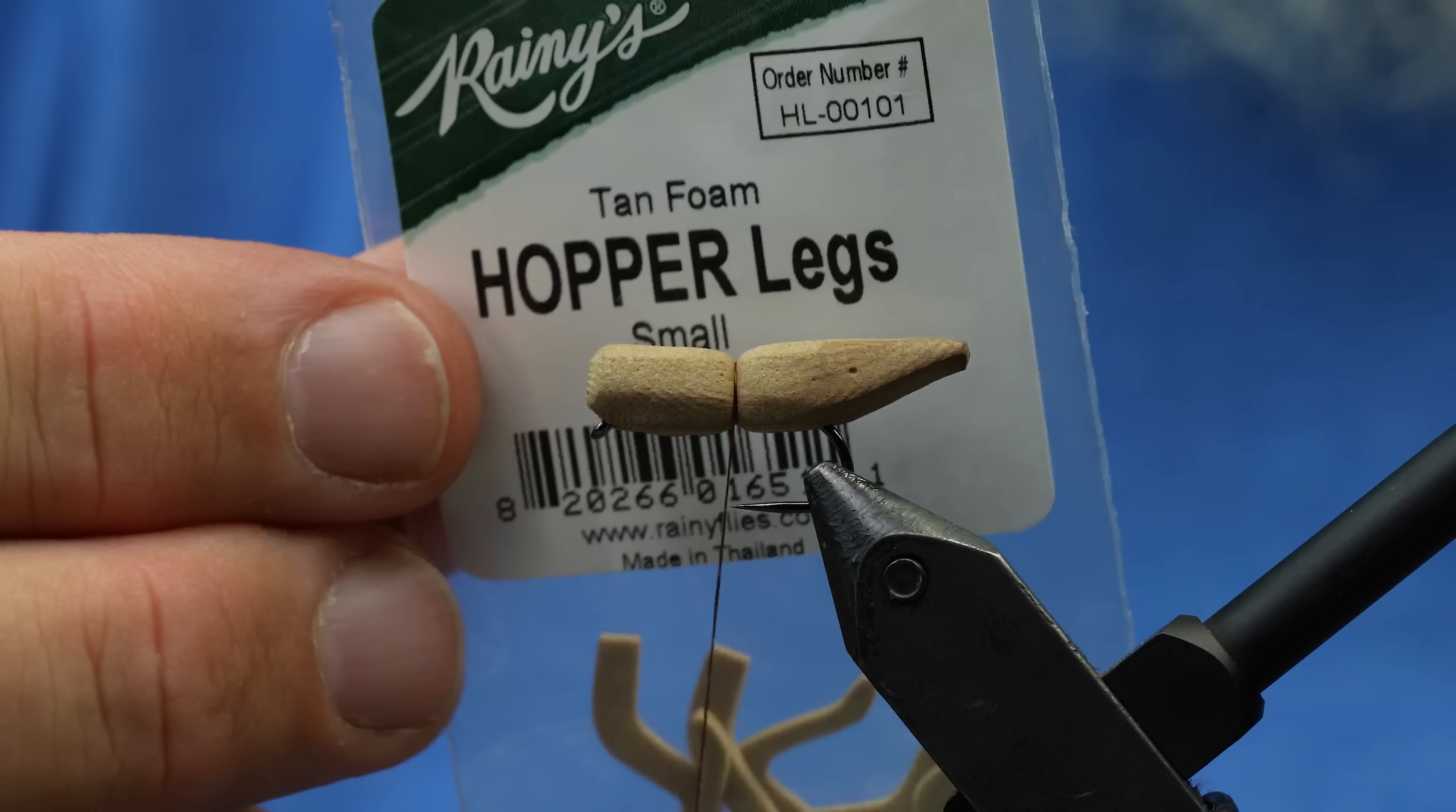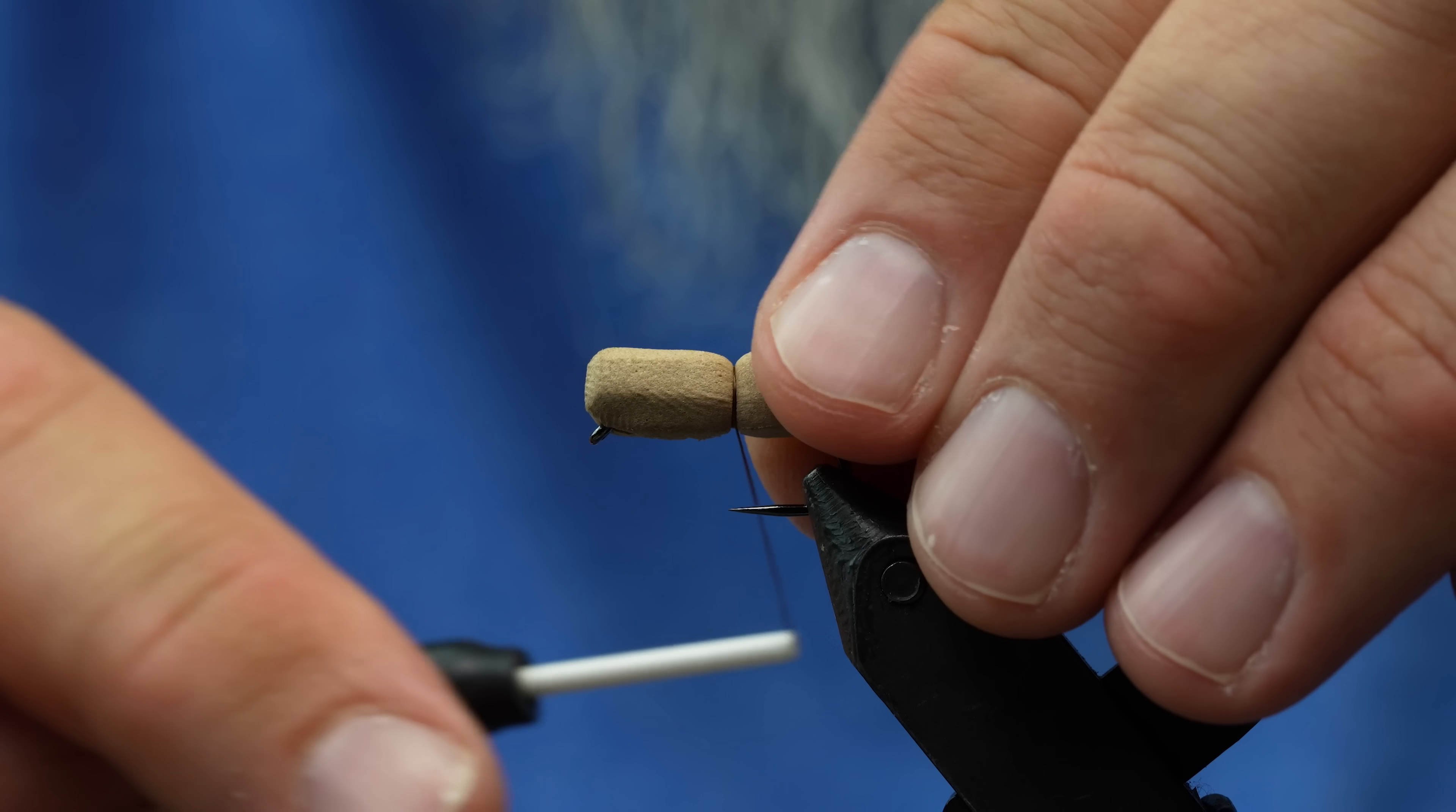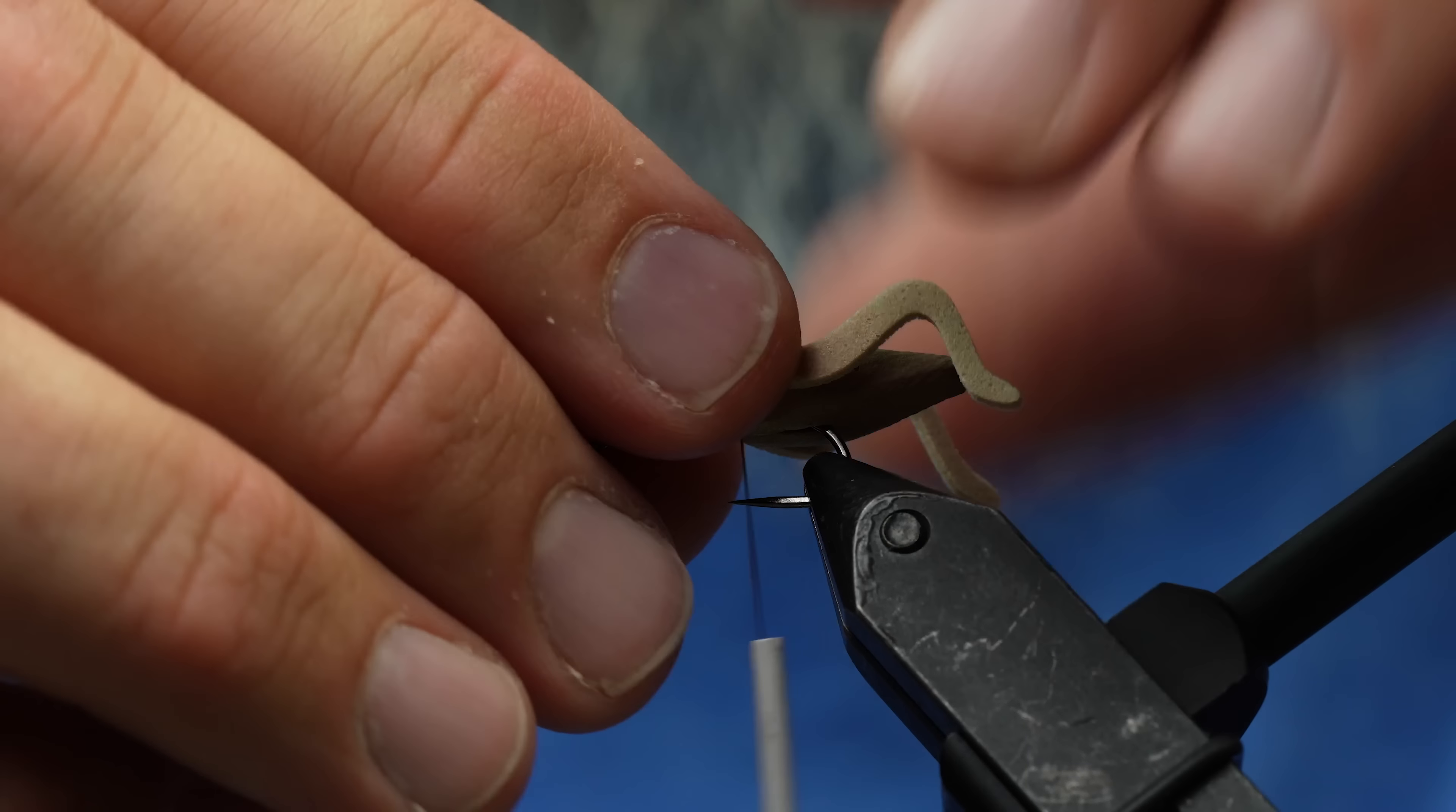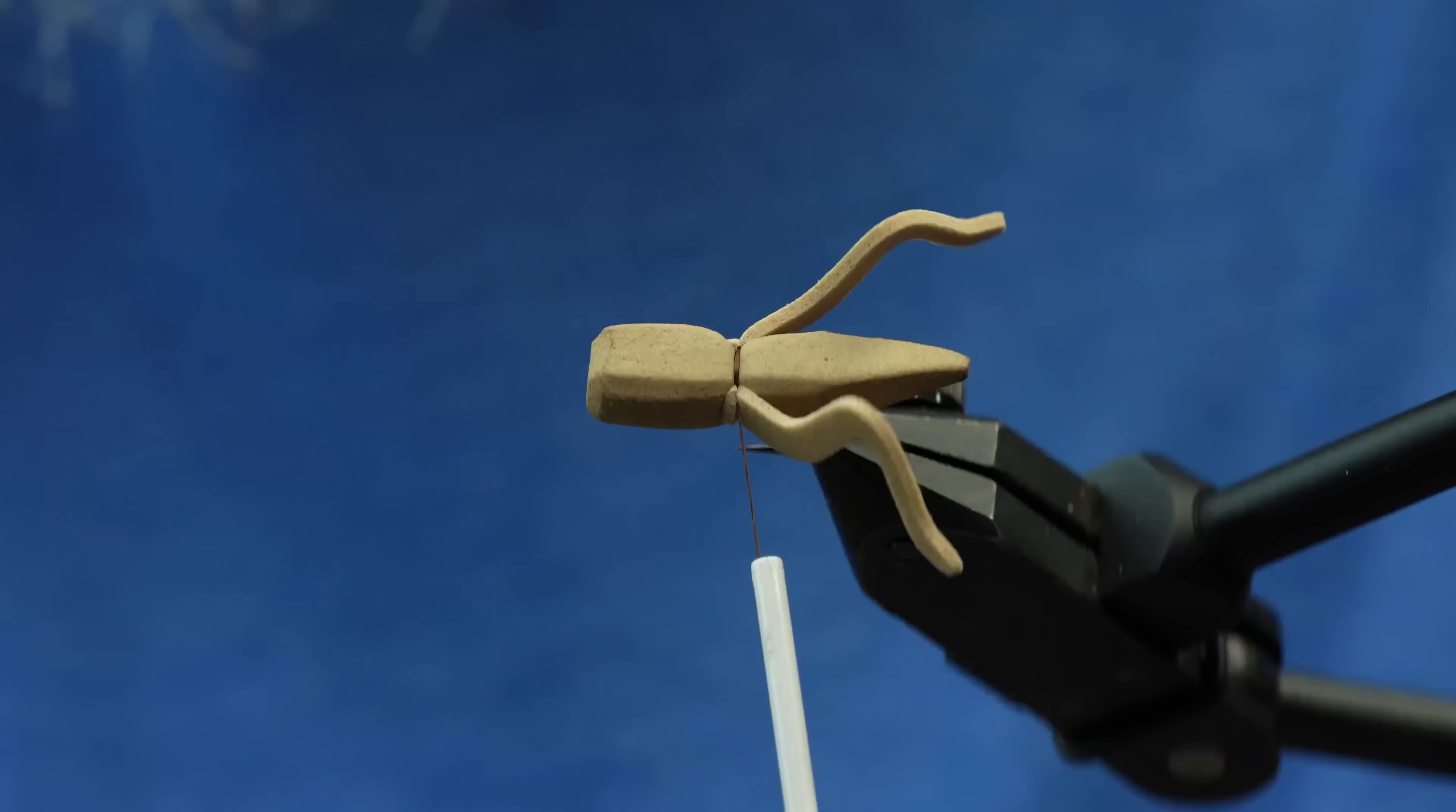The next step is I'm going to grab these hopper legs from Rainy's. This is the size small. They look like that and I'm just going to tie that in. This size small is perfect for this size hopper that I'm doing and I'm just going to tie one on one side and one on the other. It's pretty dang easy. You just tie it in where the tabs are just like that.